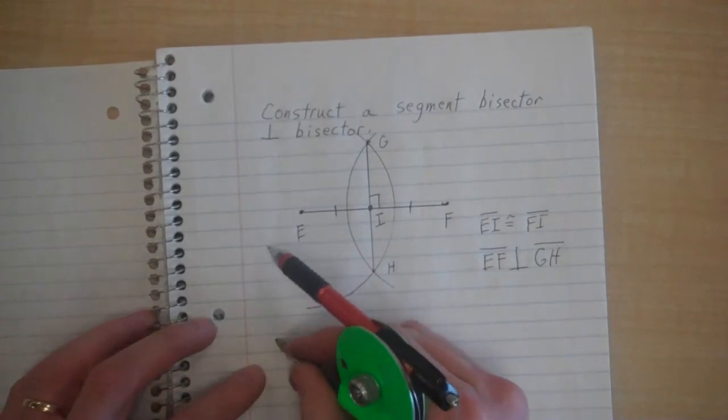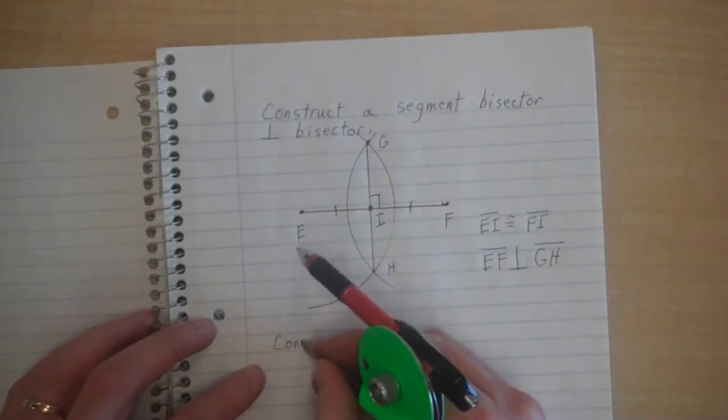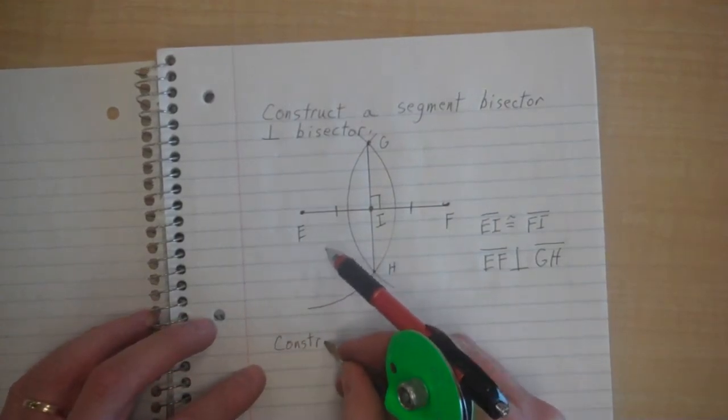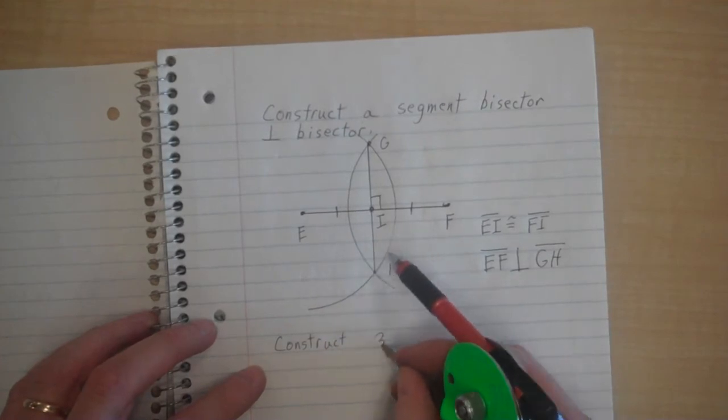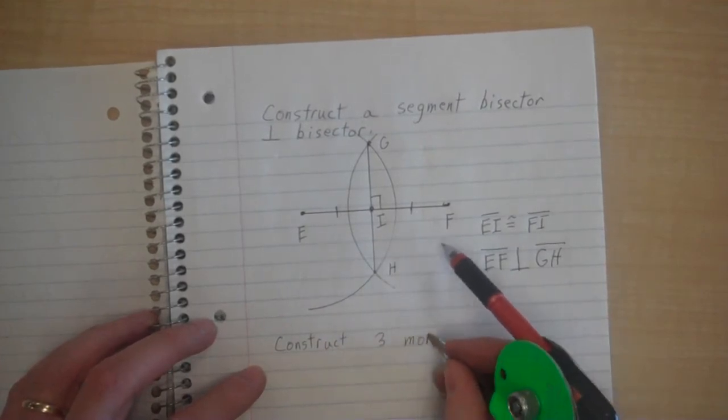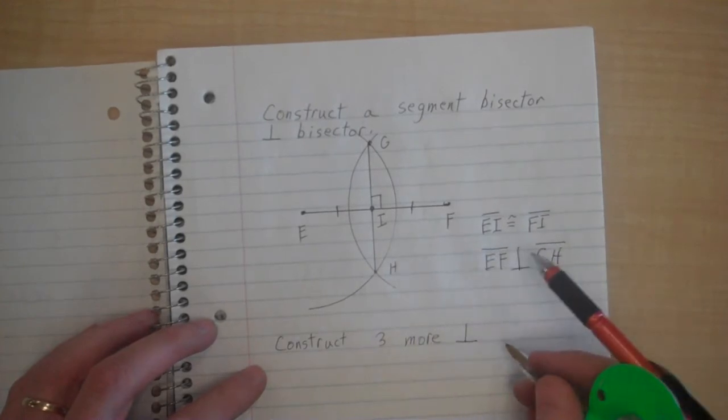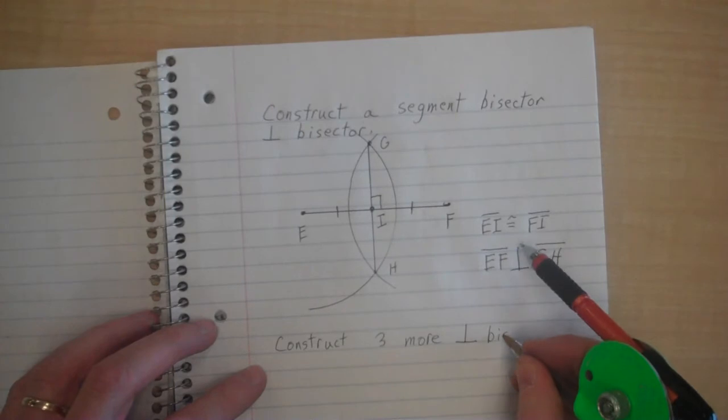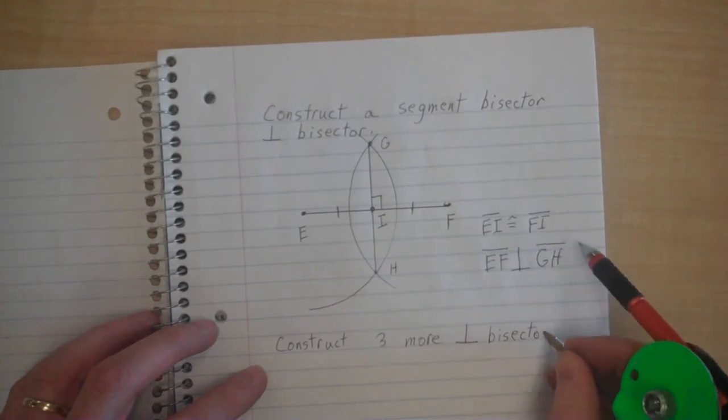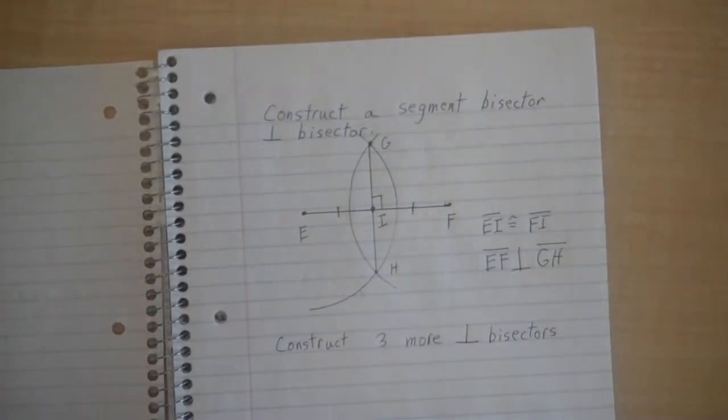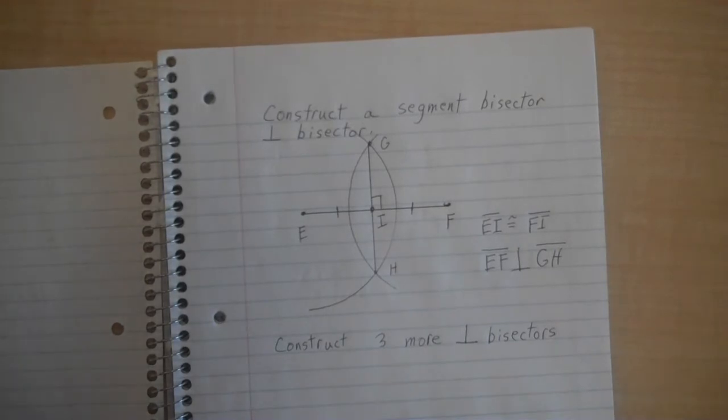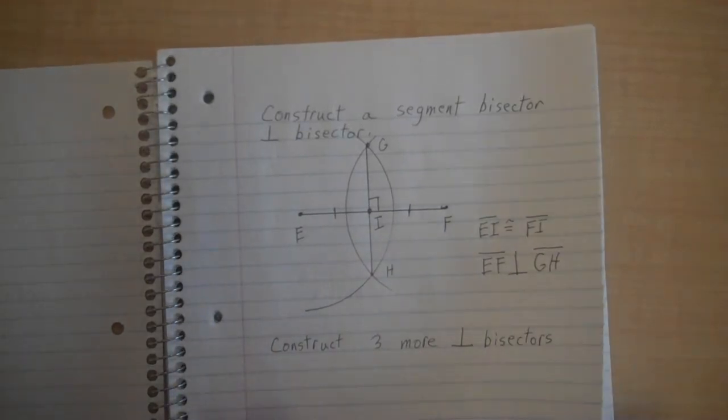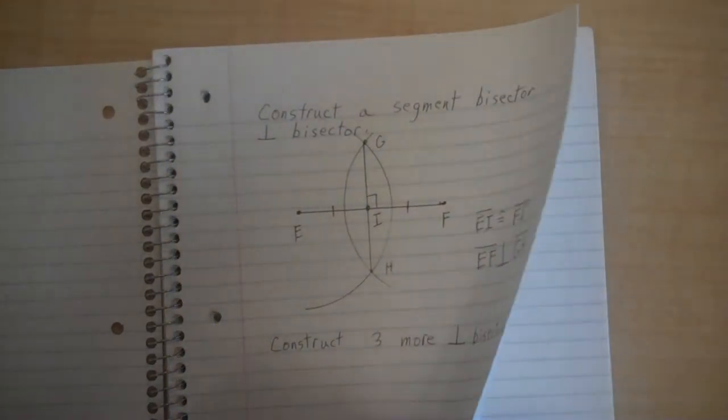You can go back and look at the steps I took, but I'd like for you to do that for different lengths. I want you to construct three more perpendicular bisectors.